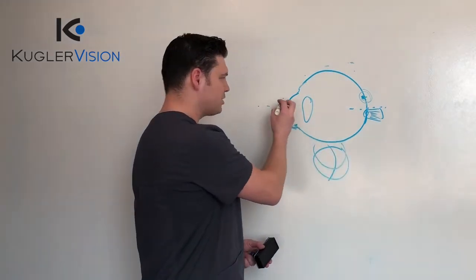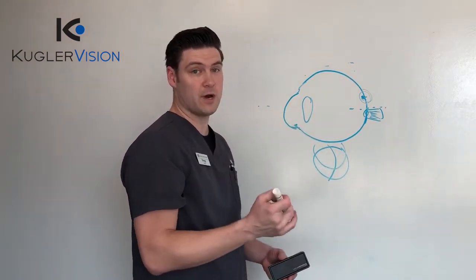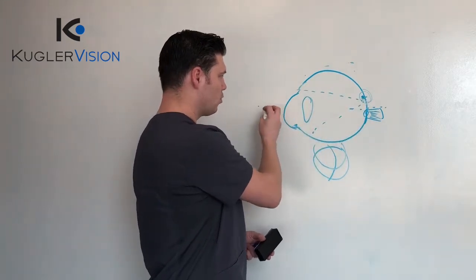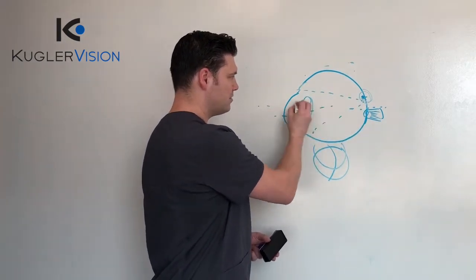When that happens, it causes the light to get focused onto two different spots in the retina. One of them could be in focus, whereas the other angle, it's not.